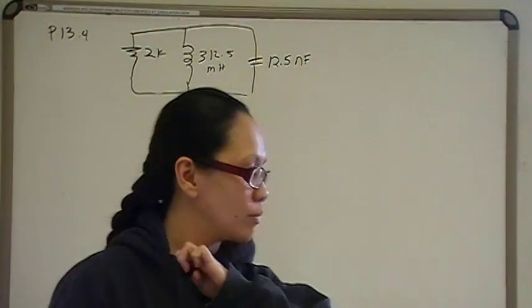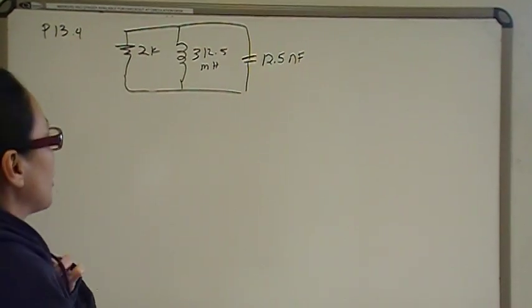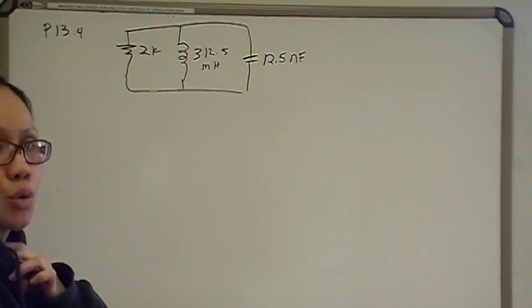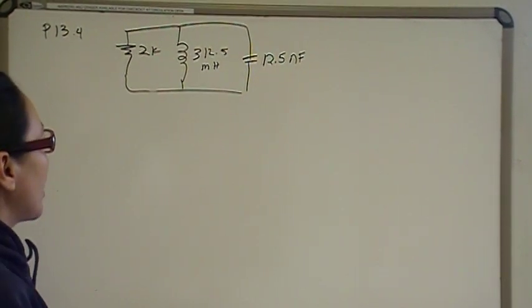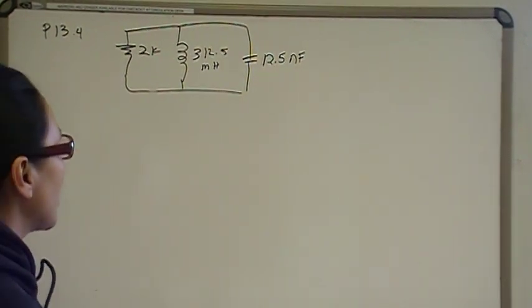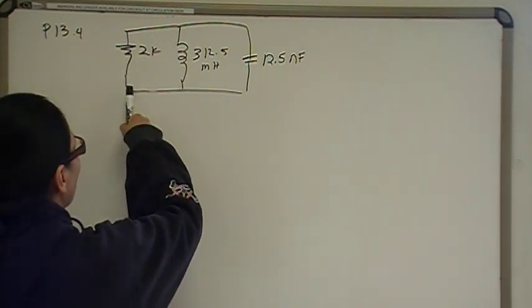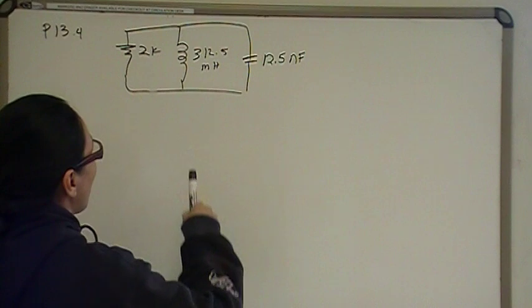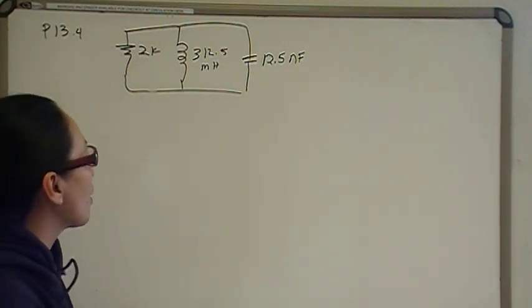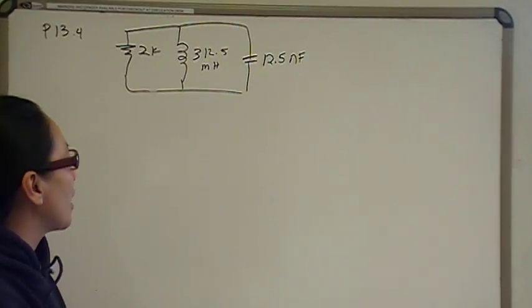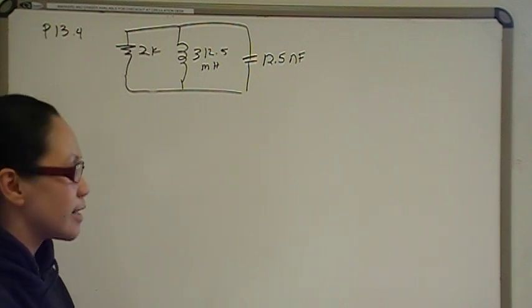The first thing we need to do before we start doing analysis in the S domain is to know how to translate impedance from the time domain into the S domain. So, we've got a 2 kilo-ohm resistor, a 0.5 millihenry inductor, and a 12.5 nanofarad capacitor, all connected in parallel.